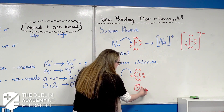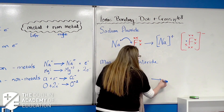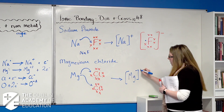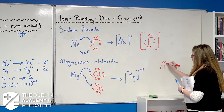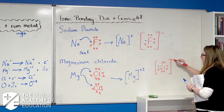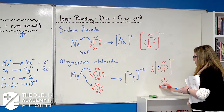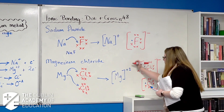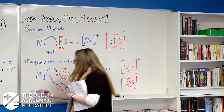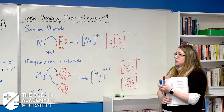Magnesium needs to donate two electrons, so one transfers to the first chlorine. Once that chlorine has accepted the electron, it has a stable octet and can't take any more, but magnesium still needs to lose another electron — so we need a second chlorine atom. That second electron transfers to the second chlorine. This forms Mg²⁺ (lost two electrons) and two Cl⁻ ions. You can put a two in front or draw it out a second time — don't do both. The chemical formula is MgCl₂.